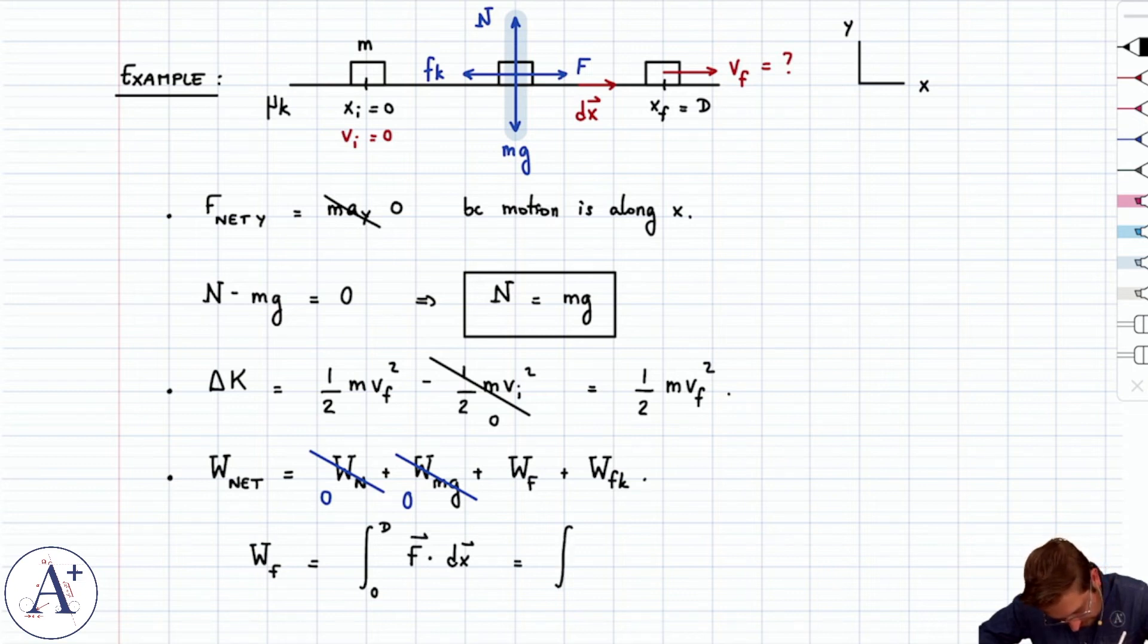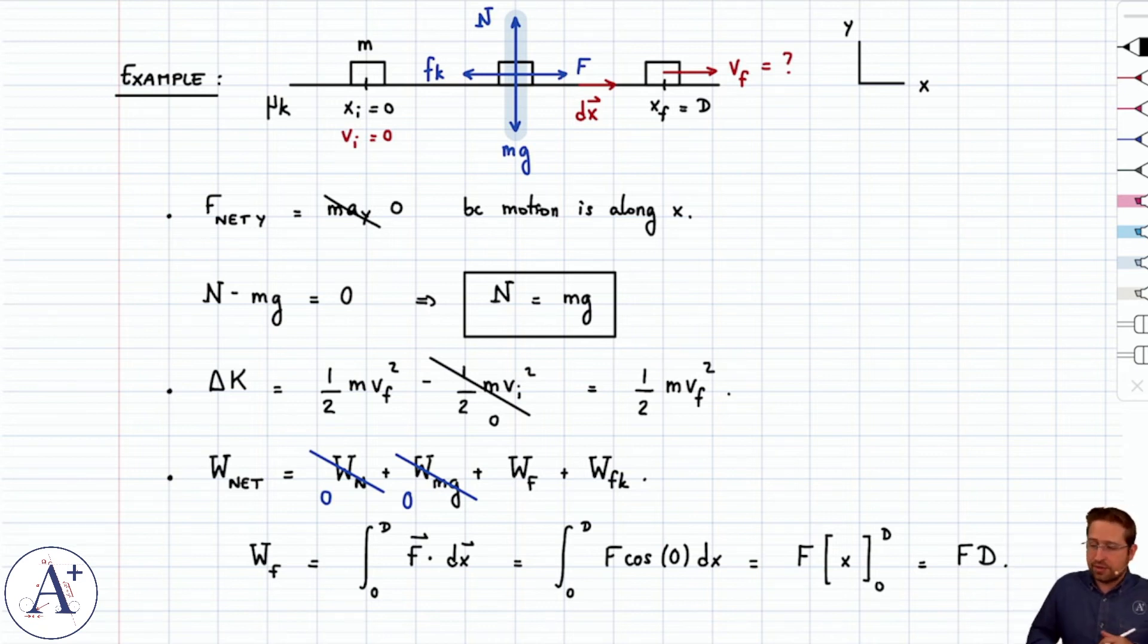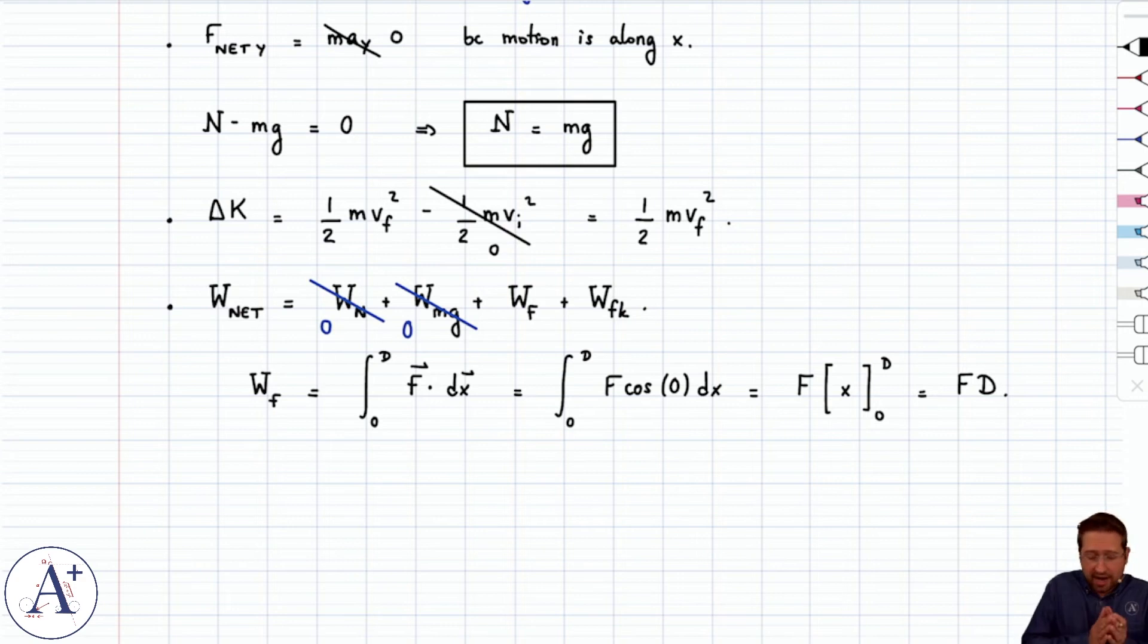Now F is in the same direction as dx. In other words, the angle between the two is zero. So I have F cosine zero dx to be integrated between zero and D. F is constant in magnitude. Therefore, I get F multiplied by x to be evaluated between zero and D. That really ends up just being F times D. And of course, because the force is constant in magnitude direction, I could have just used the dot product F dot delta x and gotten the same answer. Fair enough.